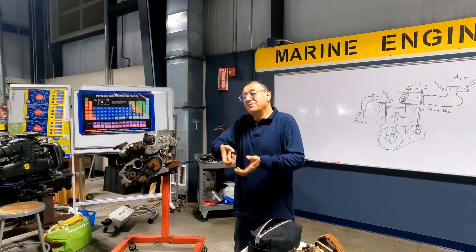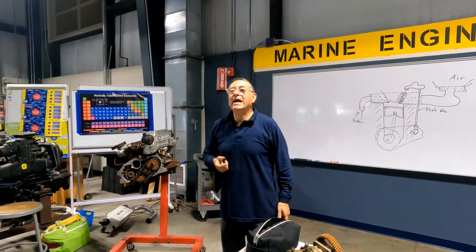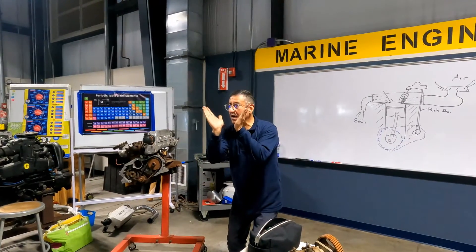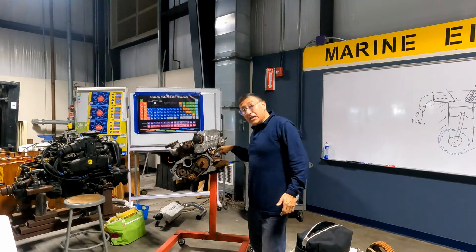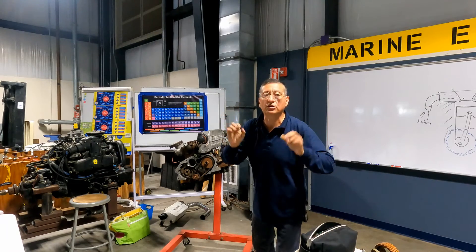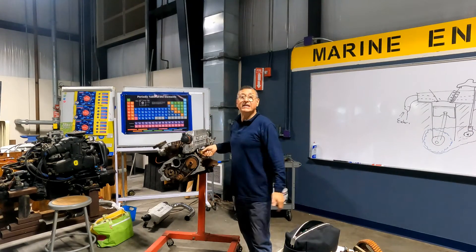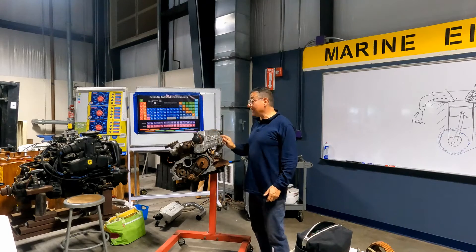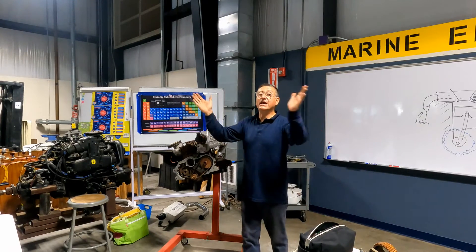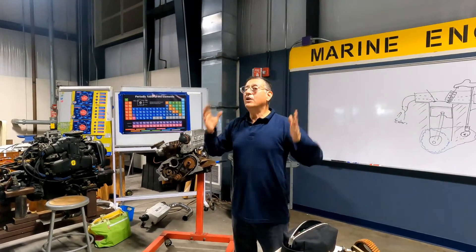To remove the pump, bring the engine to zero position in timing. Remove the pump, send it to the laboratory, and they return it calibrated at zero position. You must remove the pump with the crank and cam marks aligned at zero, because when they repair the pump they return it calibrated at zero. If you reinstall it correctly, each piston receives fuel at the right moment.